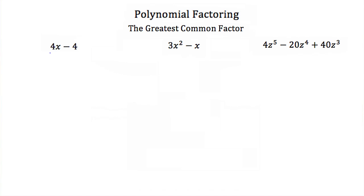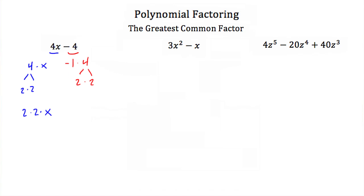You would look at the 4x and the negative 4 separately. The 4x can be factored into 4 times x, and then that 4 can be factored into 2 times 2, so 4x is 2 times 2 times x. The negative 4 can be factored into negative 1 times 4, and the 4 into 2 times 2, so negative 4 is negative 1 times 2 times 2.